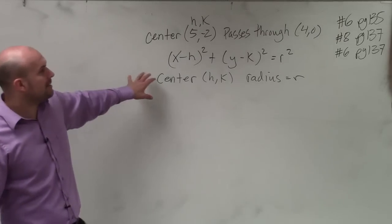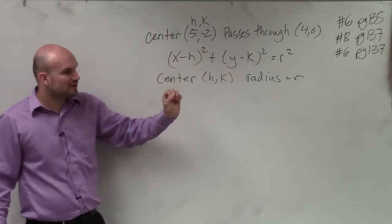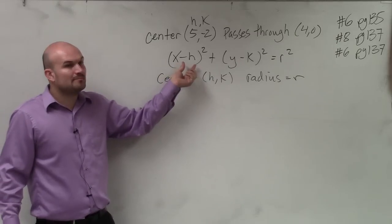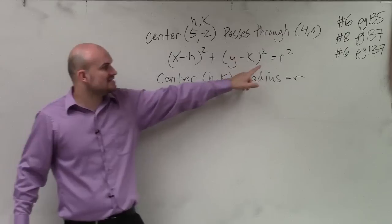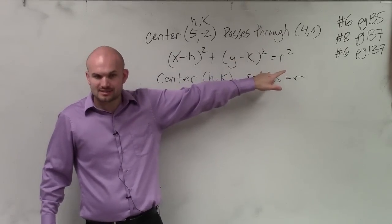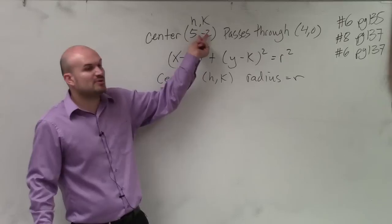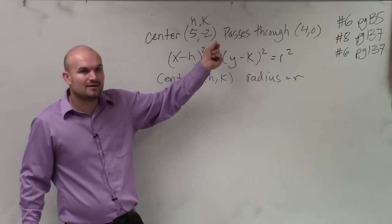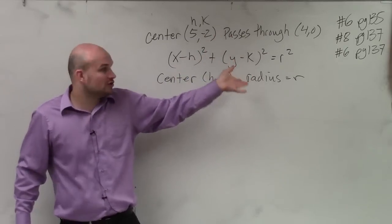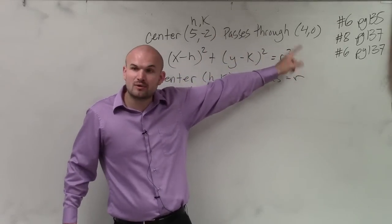So in this problem, we're not provided the radius. However, if I plugged in numbers for x and h and y and k, would it make sense that I could solve for a variable r? Yes. So I know h and k, that's provided to us. But what could I use for x and y? A point on the circle, which they give us, right?